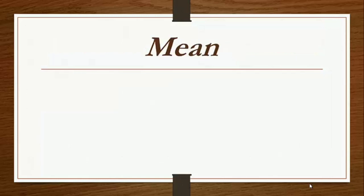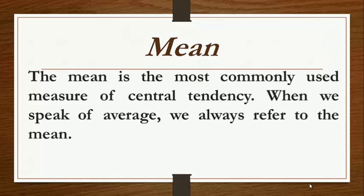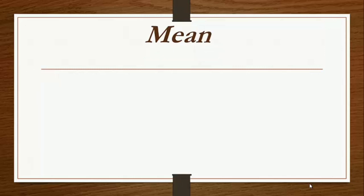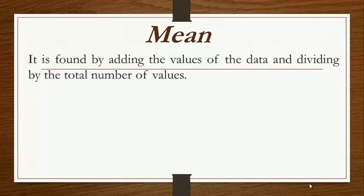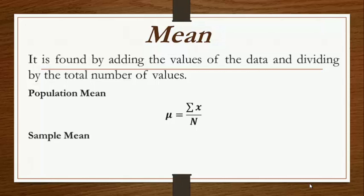Let's start with mean. The mean is the most commonly used measure of central tendency. When we speak of average, we always refer to the mean. It is found by adding the values of the data and dividing by the total number of values. When we solve for population mean, we have the formula mu equals summation of x over N. And if we solve for the sample mean, we have x-bar equals summation of x over n.